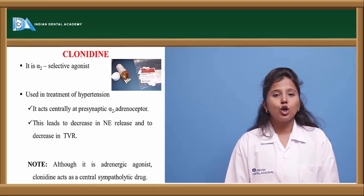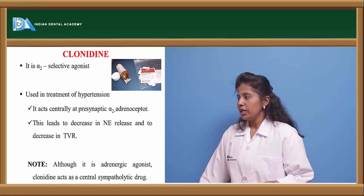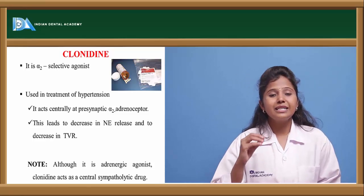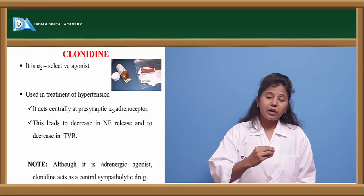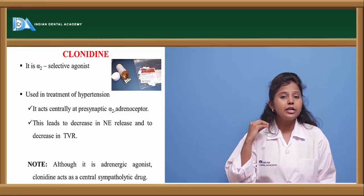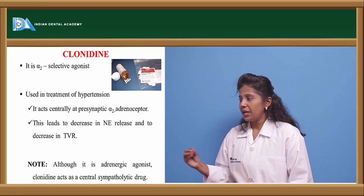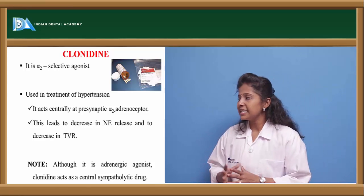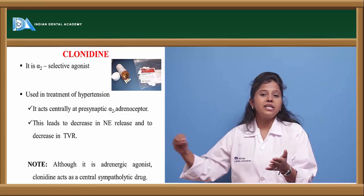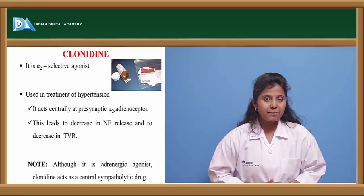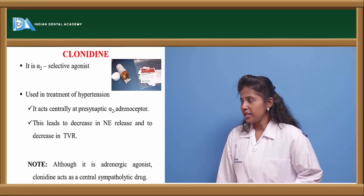Clonidine is a selective alpha-2 agonist used mainly in the treatment of hypertension. When it binds to alpha-2 receptors, it causes vasodilation. It acts centrally at presynaptic alpha-2 receptors, going directly to those receptors and exerting its antihypertensive actions.